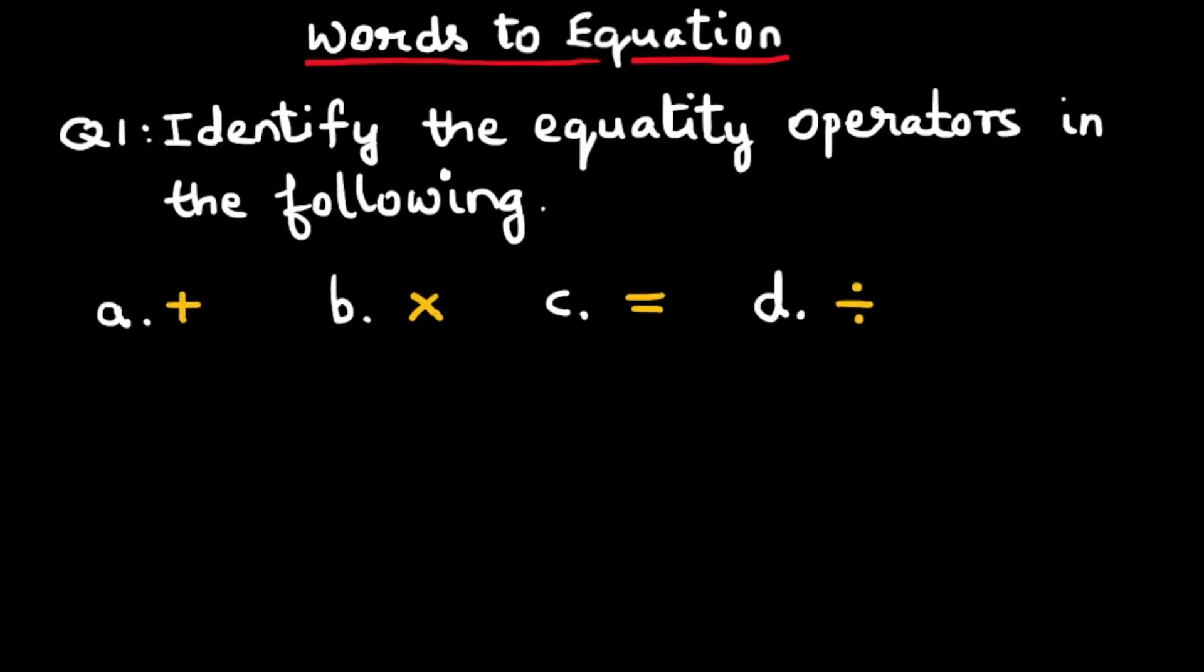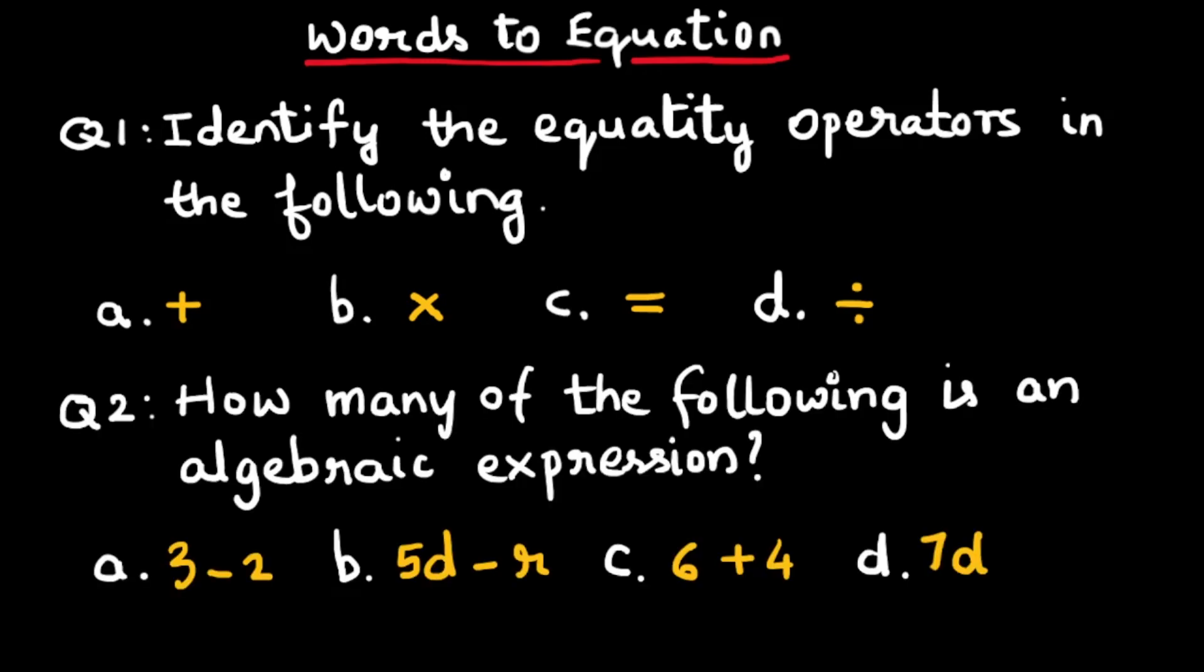First question is, identify the equality operators in the following: plus, multiply, is equal to, divide. How many of the following is an algebraic expression? 3 minus 2, 5d minus r, 6 plus 4, 7d.